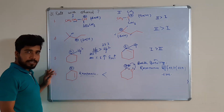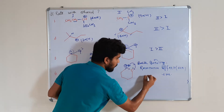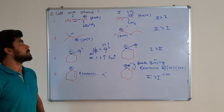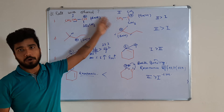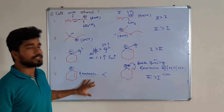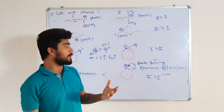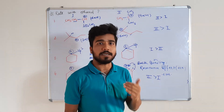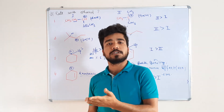So the rate of the second compound will be higher than the first in solvolysis with ethanol. I hope this clarifies your concept on how to check the rate of SN1 reaction with different substituents. If you have any doubts, you can post them in the comment section below. Please subscribe to the channel and share it with your friends.